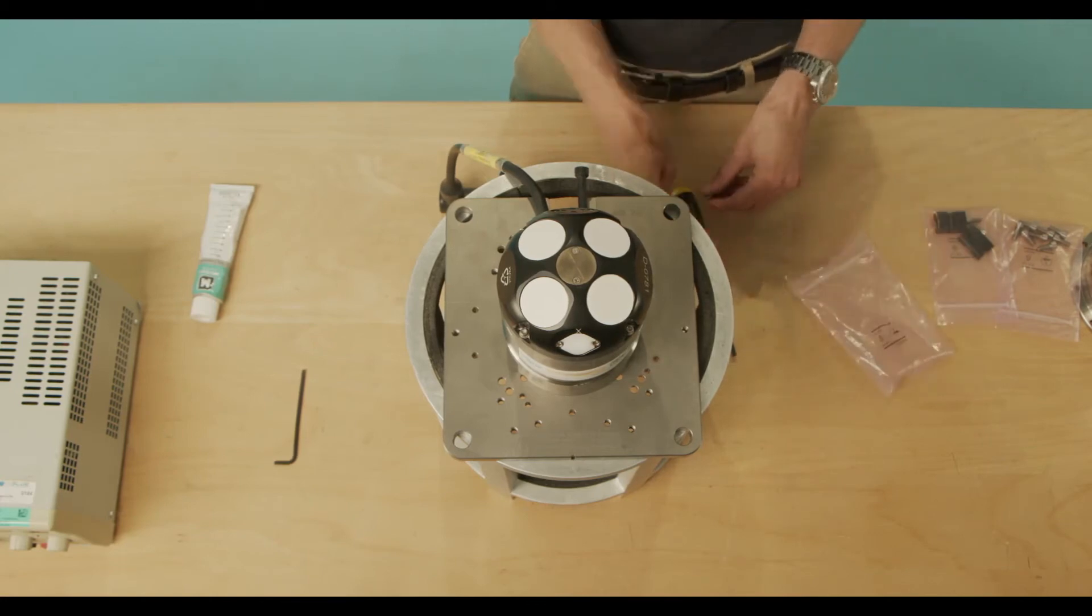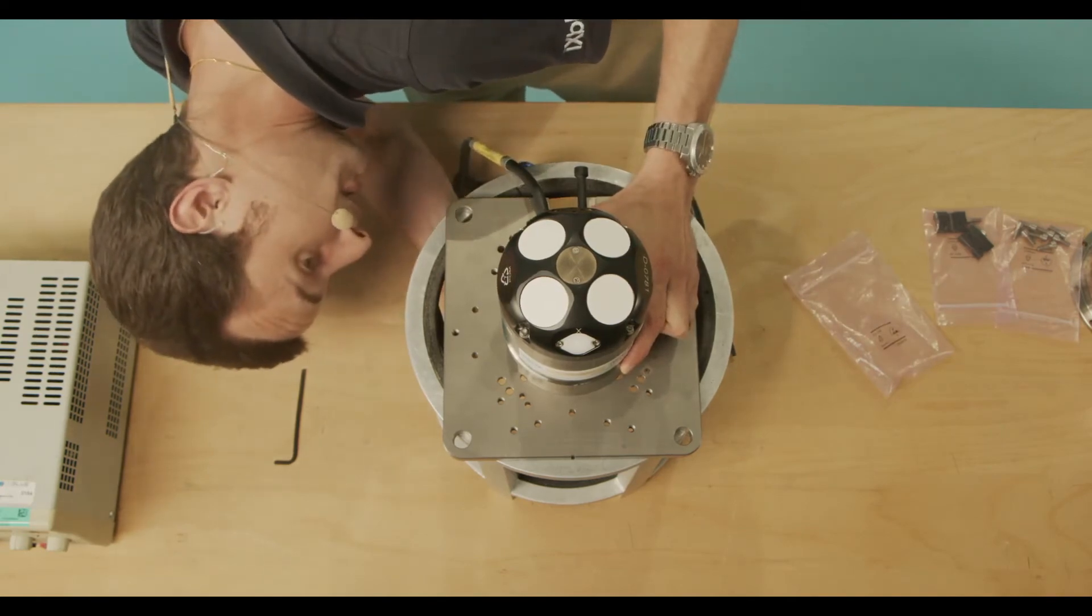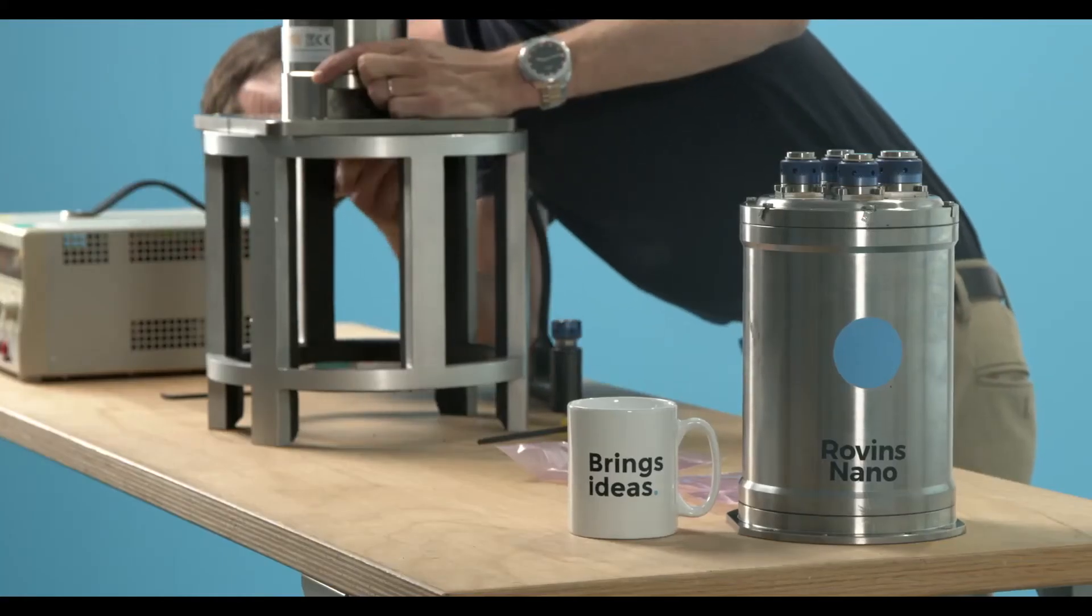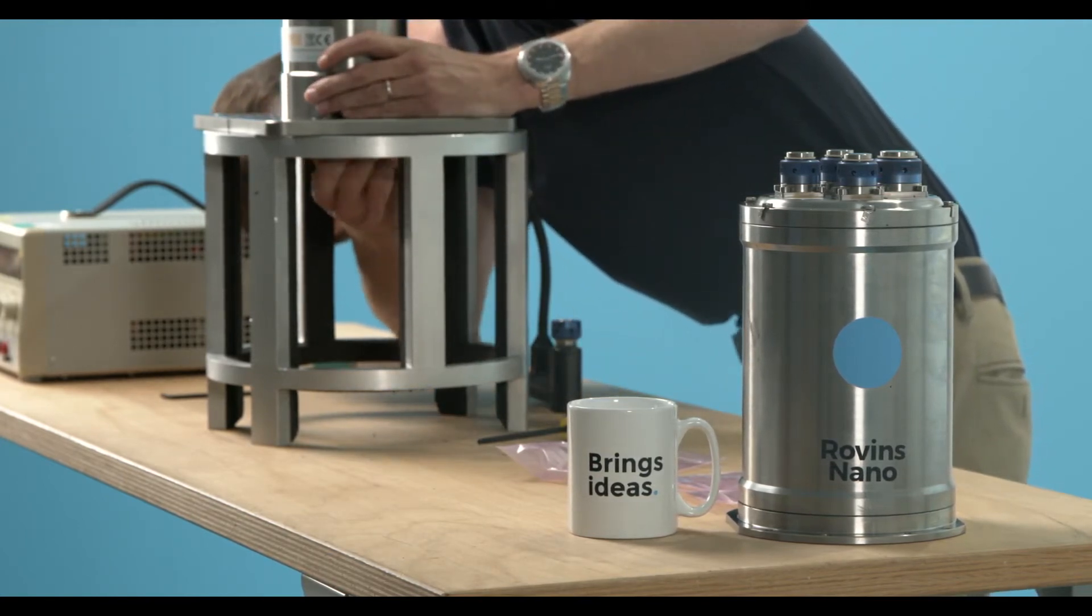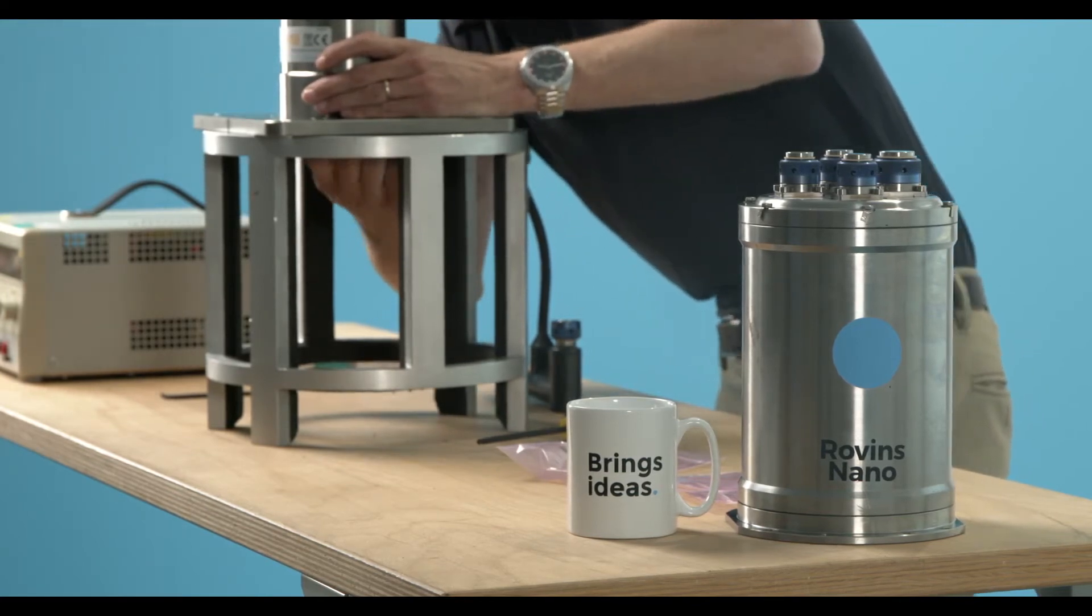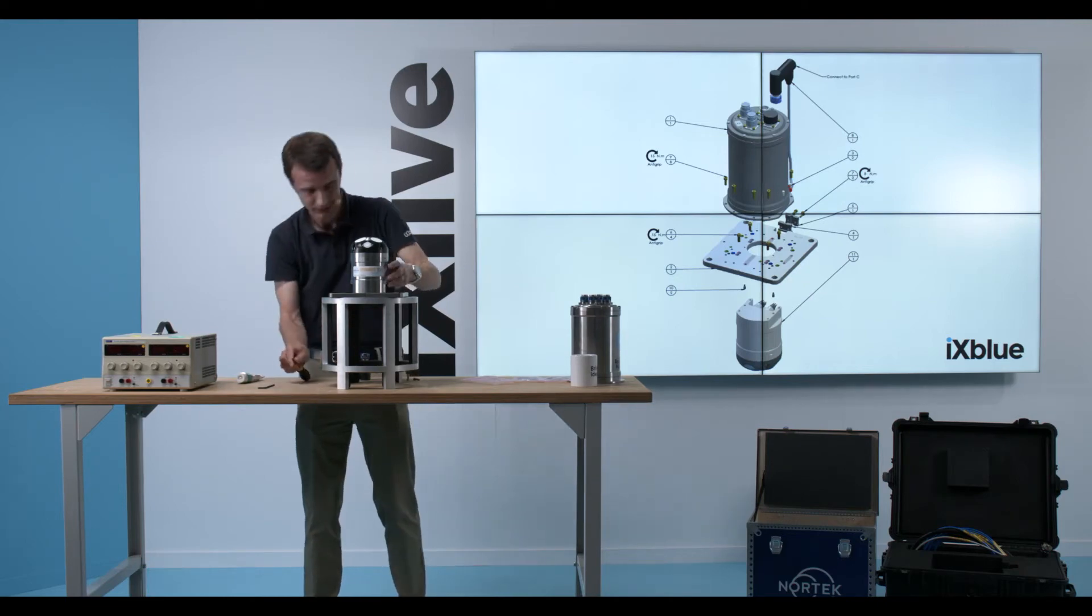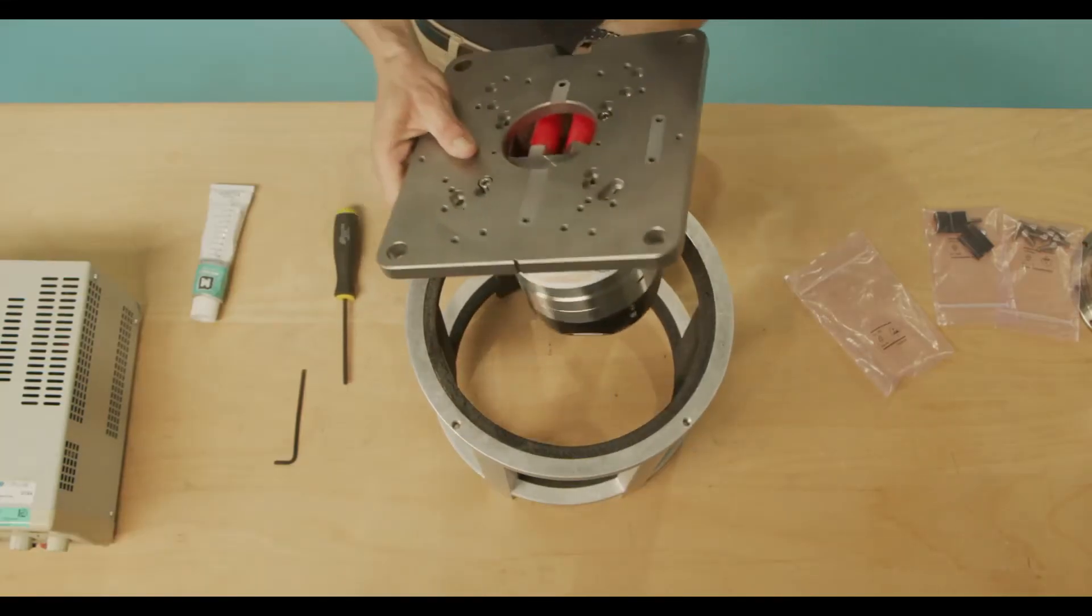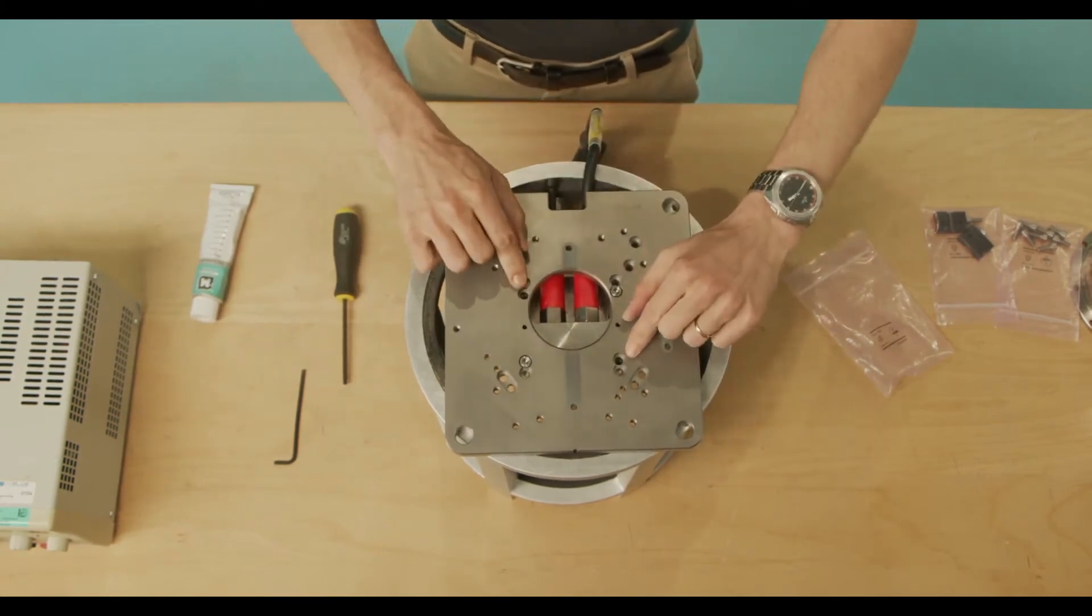And I'll use the one-fourth of an inch screws. The idea is to fit already two of them, and then I will turn the plate for an easier fit. So I secure the unit with two screws here.